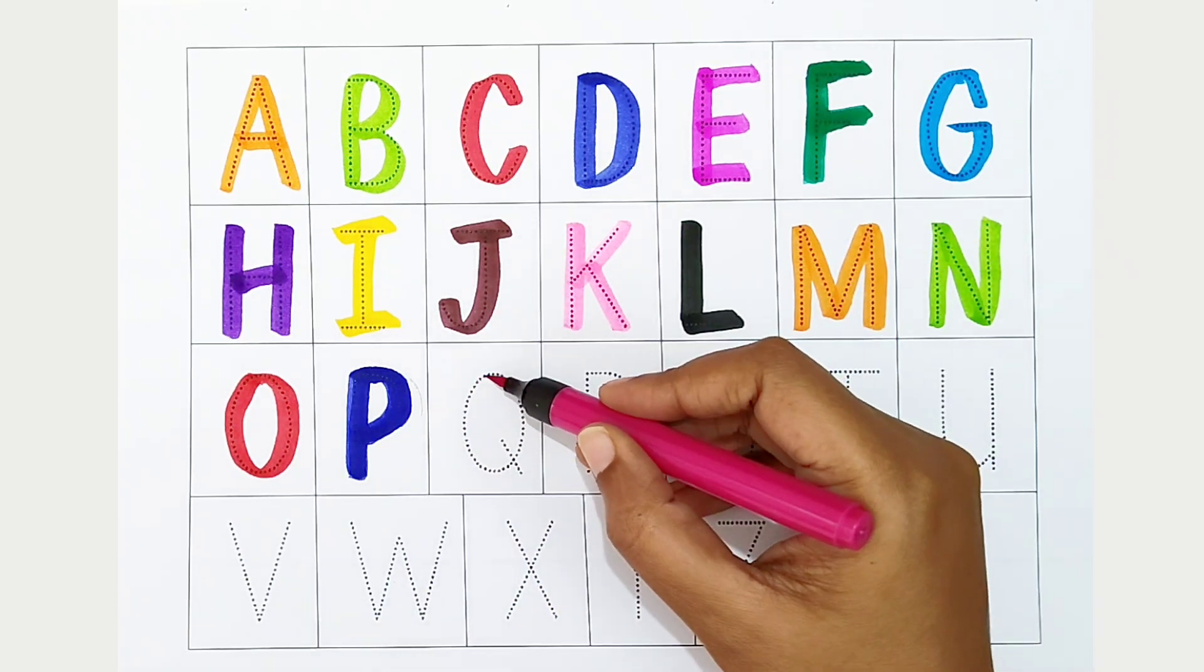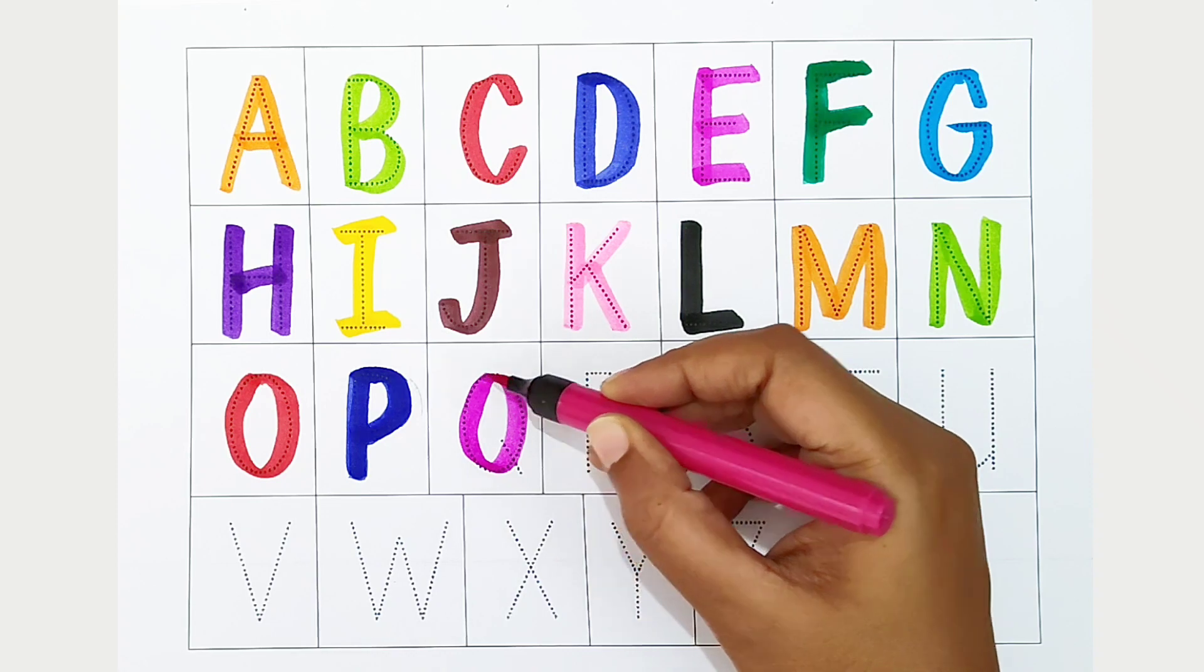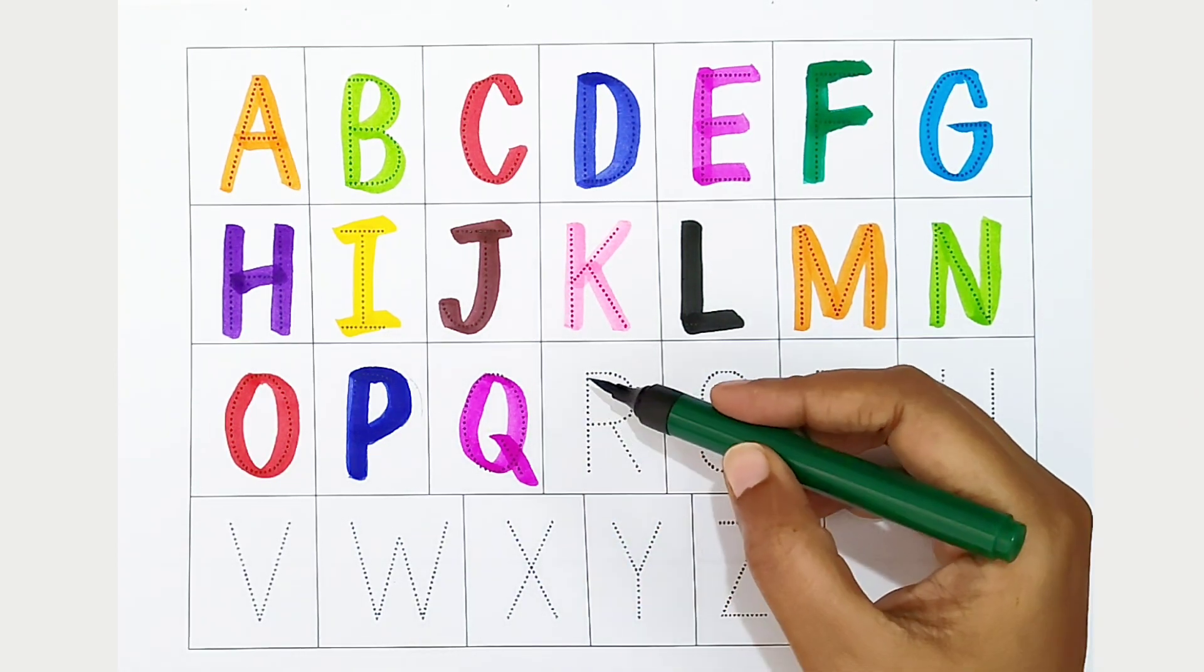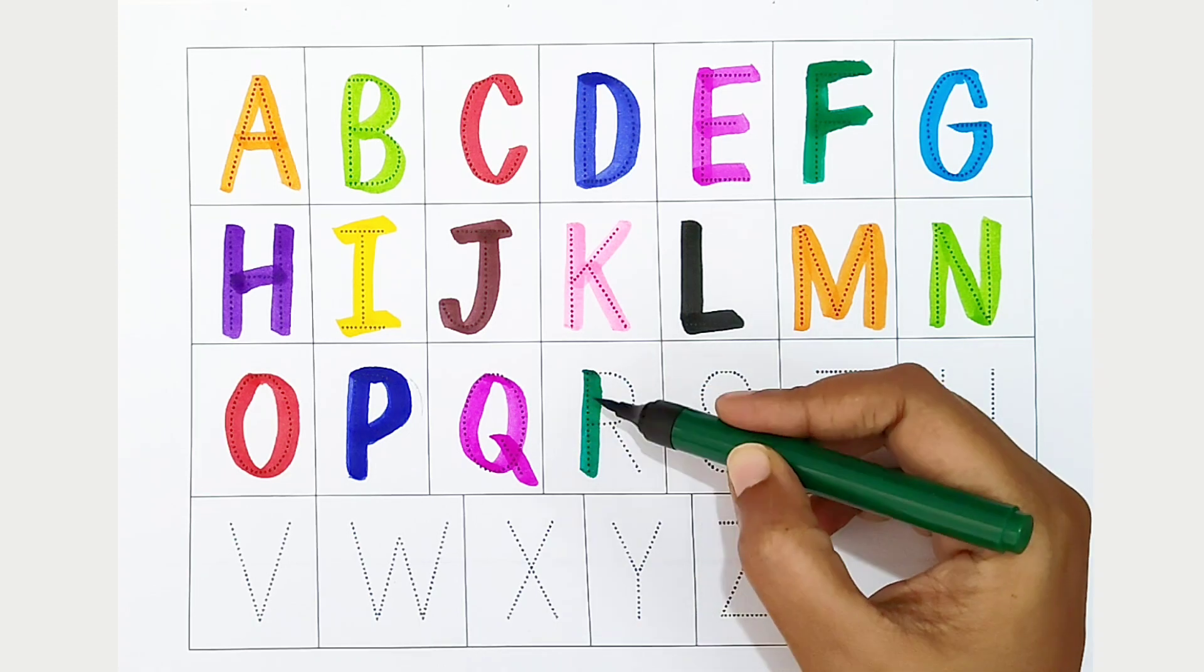Q, dark pink color. Q is for queen. R, dark green color. R is for rabbit.